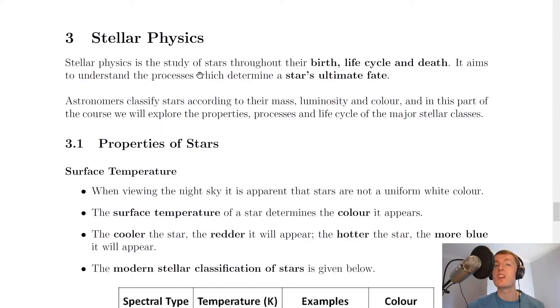Stellar physics is the study of stars throughout their birth, life cycle and death. It aims to understand the processes which determine a star's ultimate fate, i.e. what's going to happen to a star.